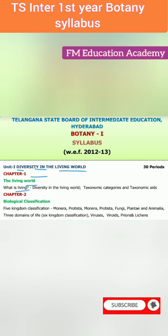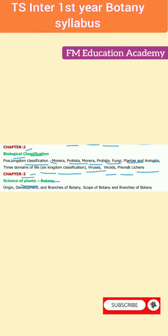Chapter 1: The Living World — What is Living? Diversity in the Living World, Taxonomic Categories and Taxonomic Aids. Chapter 2: Biological Classification — 5 Kingdom Classification: Monera, Protista, Fungi, Plantae and Animalia. 3 Domains of Life, 6 Kingdom Classification: Viruses, Viroids, Prions and Lichens.